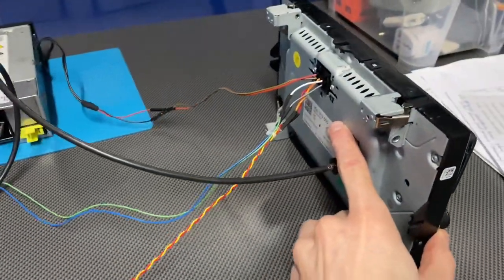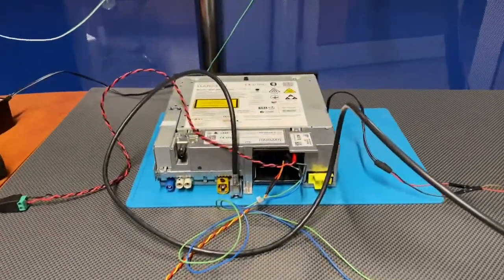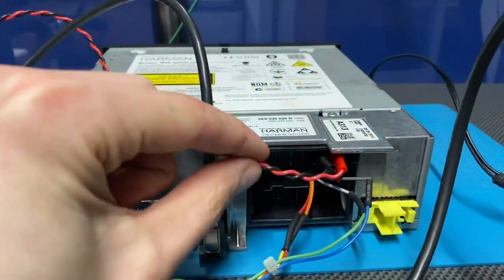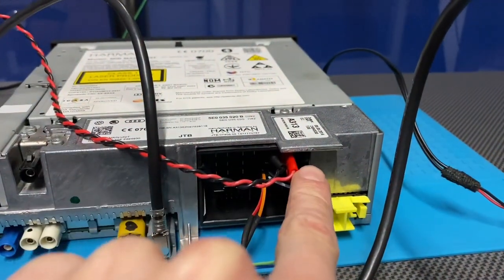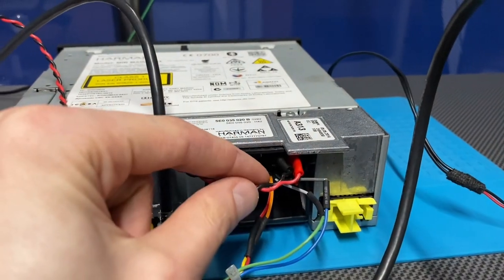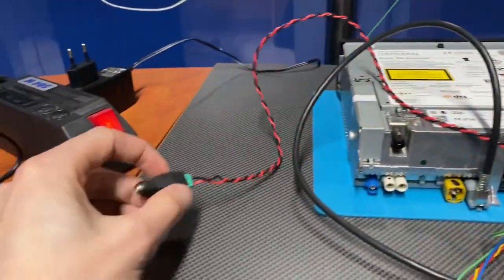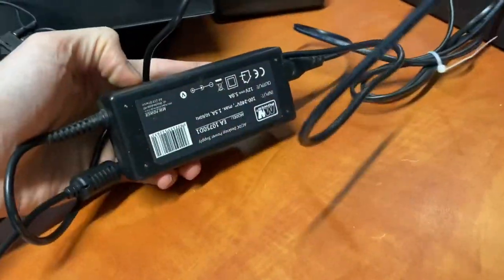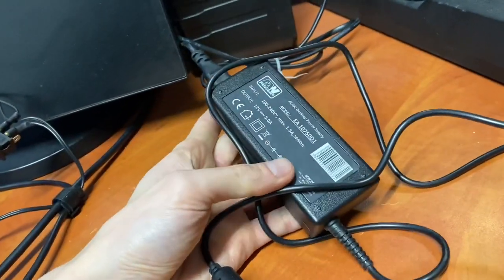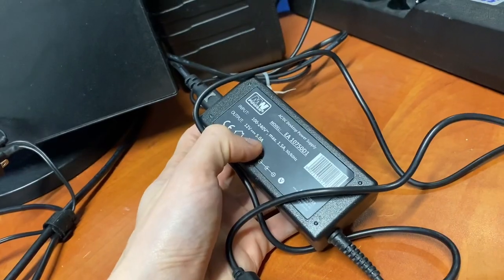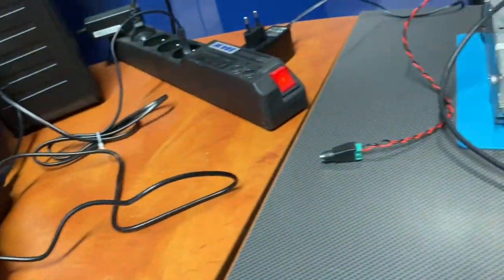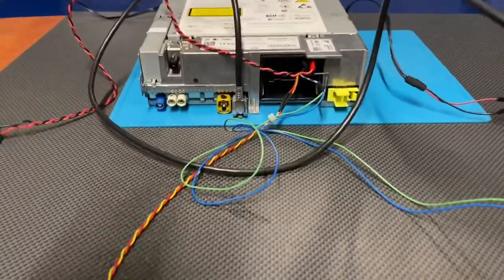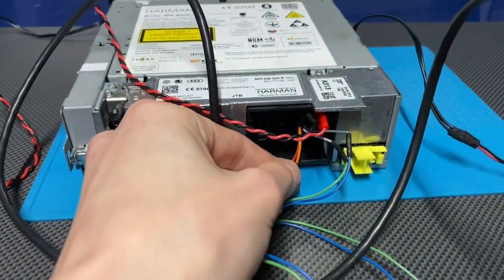Now let's check the MIB unit. So over here we have power, 12 volts over here, ground over here, and I'm going to power it through this 12 volt adapter which provides 5 amps. This is more than enough, I believe 3 amps are good to go.